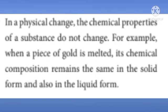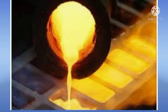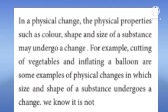In a physical change, the chemical properties of a substance do not change. For example, when a piece of gold is melted, its chemical composition remains the same in solid form and also in liquid form. In a physical change, the physical properties such as color, shape, and size of a substance may undergo a change. For example, cutting of vegetables and inflating a balloon are examples of physical changes in which the size and shape of a substance undergo a change.